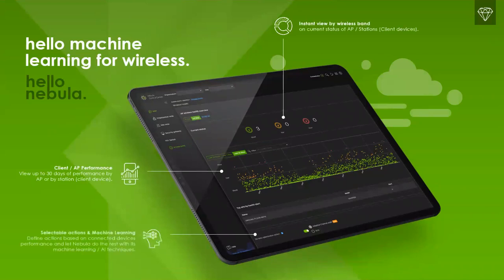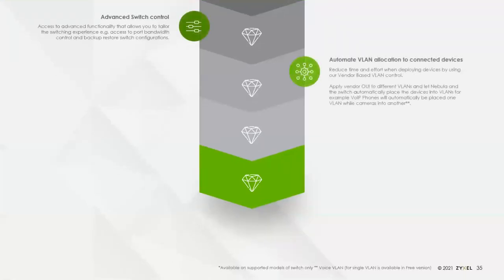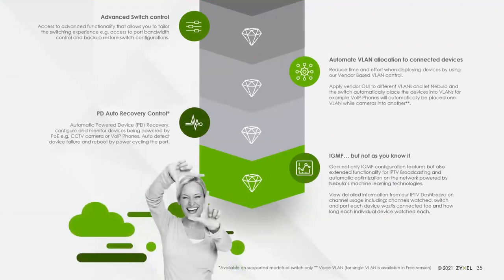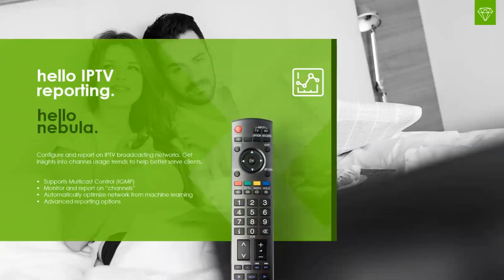The machine learning feature tracks performance of each individual client device per AP and makes changes to optimize your wireless network based on the client behavior we are seeing. On the switch side, Pro Pack gives you access to more switch configuration features, including the ability to back up switch configurations, automate VLAN allocation using OUI — looking at the first few digits of the MAC address to apply a VLAN. On 1350 switches, it gives you the ability to periodically ping connected PoE devices and automatically power cycle them if they stop responding. For IPTV, you get advanced IGMP snooping settings and dedicated IPTV reports.